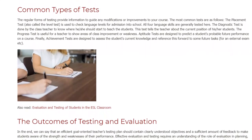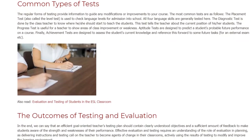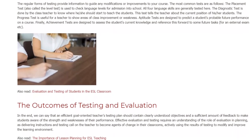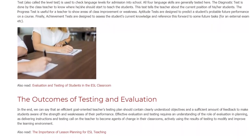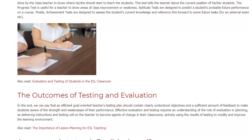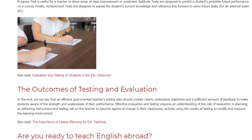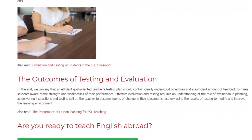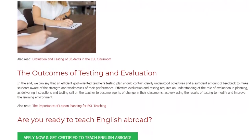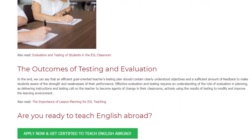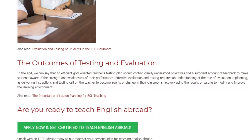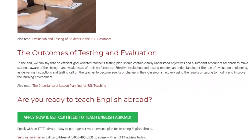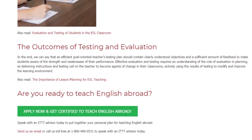The outcomes of testing and evaluation. An efficient, goal-oriented teacher's testing plan should contain clearly understood objectives and a sufficient amount of feedback to make students aware of the strengths and weaknesses of their performance. Effective evaluation and testing requires an understanding of the role of evaluation and planning, as delivering instructions and testing calls on the teacher to become an agent of change in the classroom, actively using the results of testing to modify and improve the learning environment.